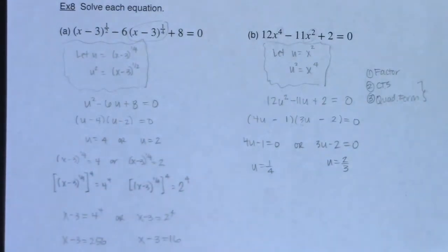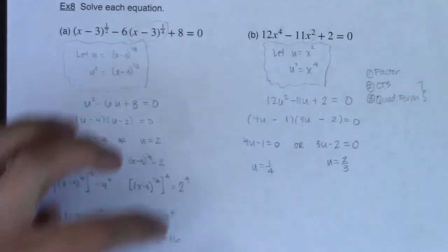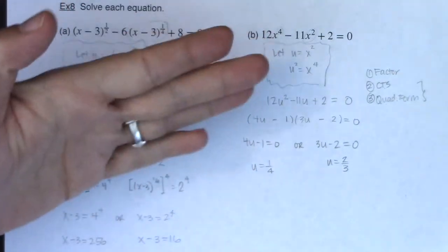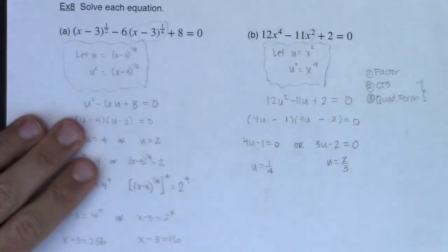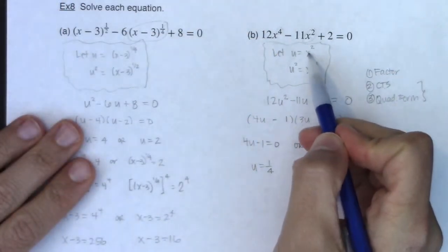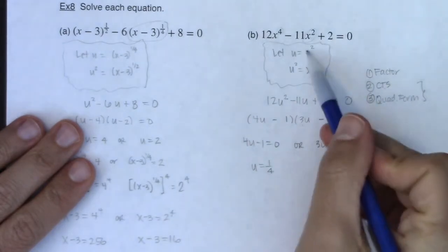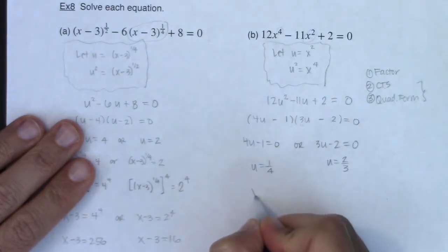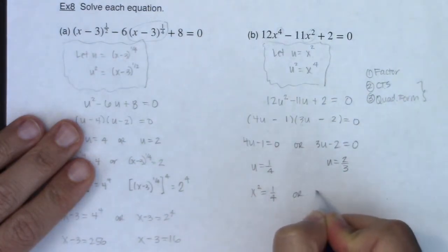And again, that's all fine and good, right? We get pretty pumped because we're like, sweet, I got some answers. But the problem is you didn't start with u's. You started with x's. So you need to sub back. So here we go. We know x squared is equal to 1 fourth or x squared is equal to 2 thirds because that's what u is equal to. So let's do x squared would equal 1 fourth or x squared would equal 2 thirds.